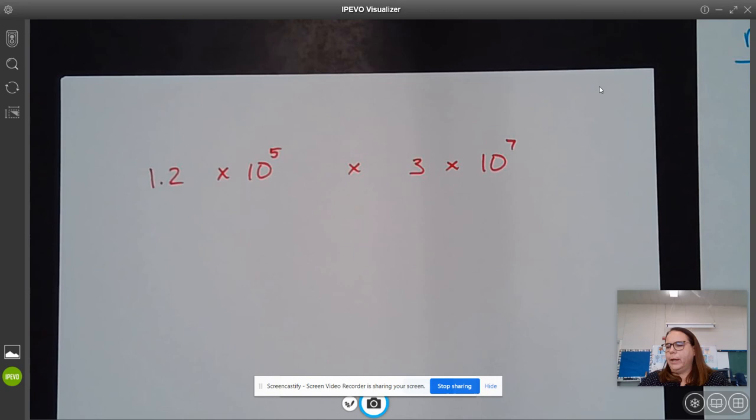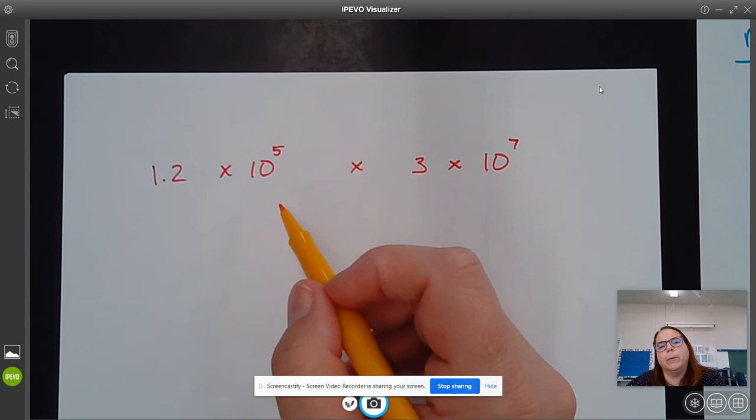All right? Now, I know, I see multiply, multiply, multiply, and multiply. And so what we can do is just change the order that these numbers are multiplied in.